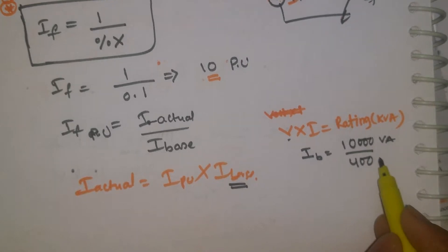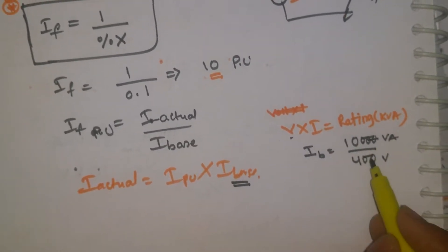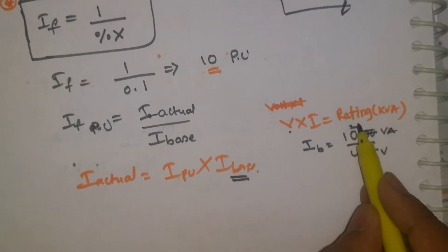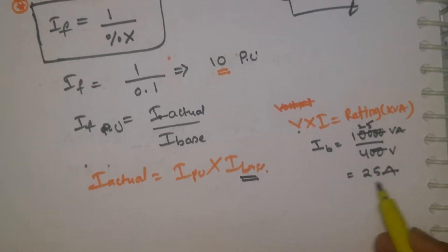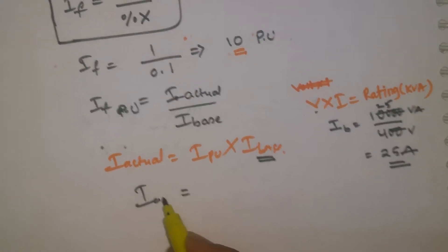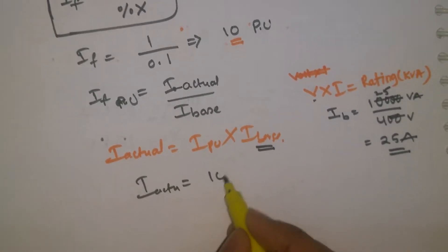Now it becomes V by, what I have, 400. So I base is 25 amps.